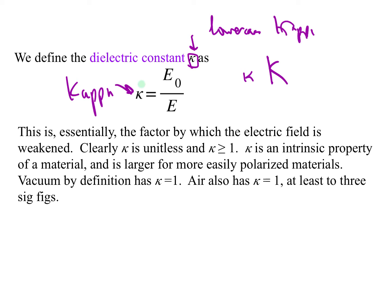And we define that the dielectric constant kappa is defined as the original field divided by the new field. Why do we define it that way? It turns out it's useful. In a second we'll see why it's nice to think of it that way.